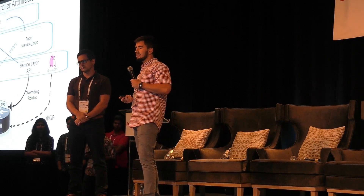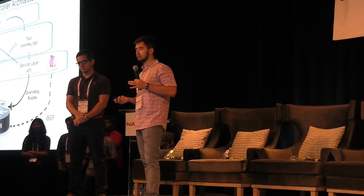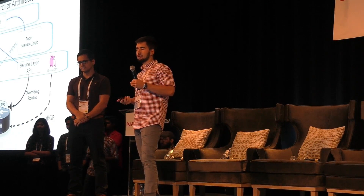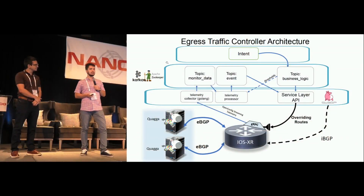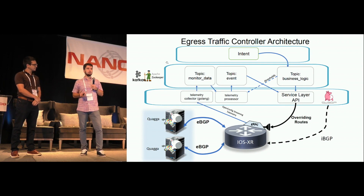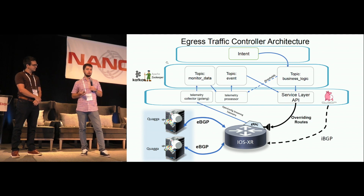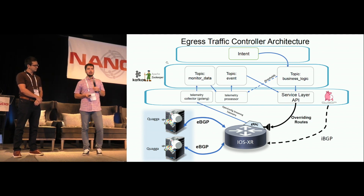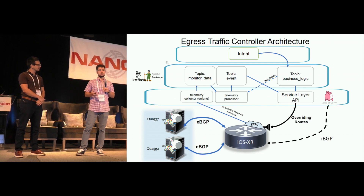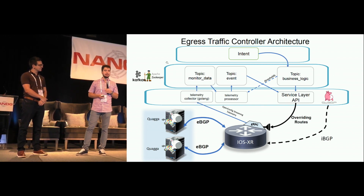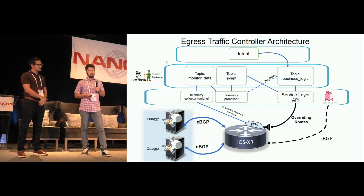I will not try to pronounce our team name. Let's talk about our solution. It's a traffic controller architecture — we were trying to replace a regular controller with a Kafka messaging bus. We set up our environment in a Google Cloud infrastructure: one IOS XRV router and a few Linux Quagga instances, just to reduce the memory footprint. And we started to explore from there.